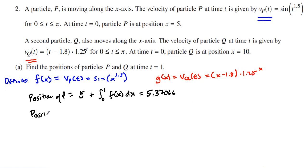And now if I want to find the position of particle Q, particle Q starts at a different position, starts at 10. And we're going from zero to one. But I call this g of x dx. And of course, you can call it v of t for something else and for particle Q. And it's 8.56435.